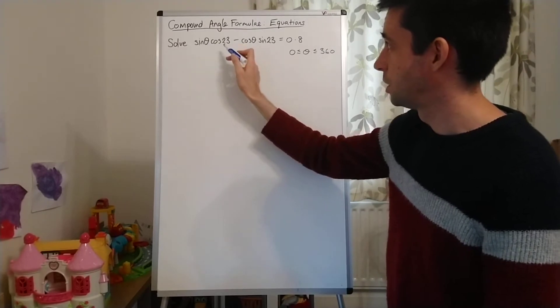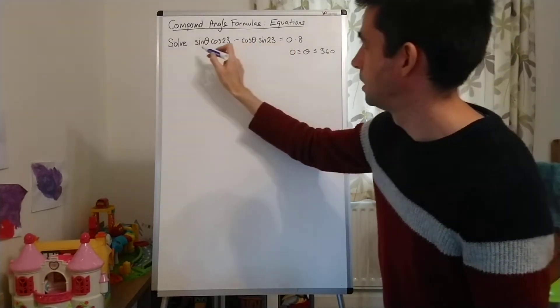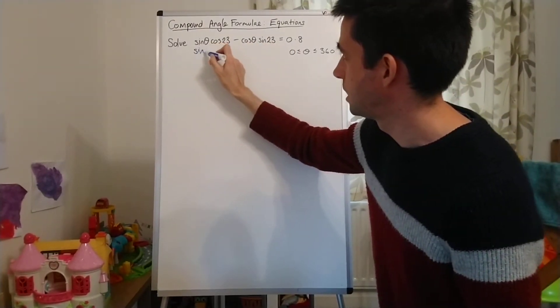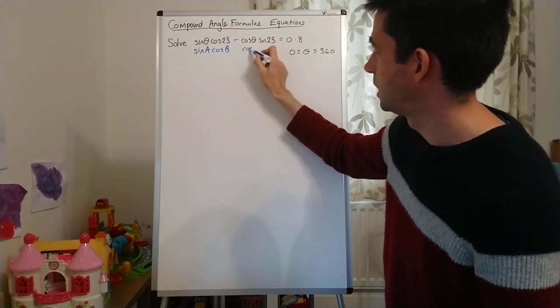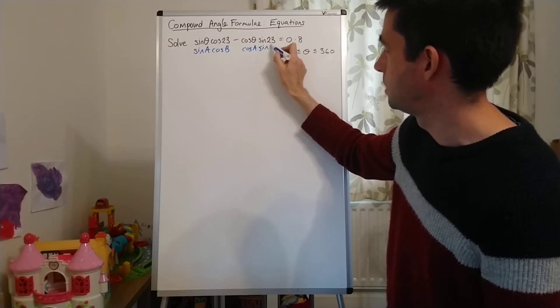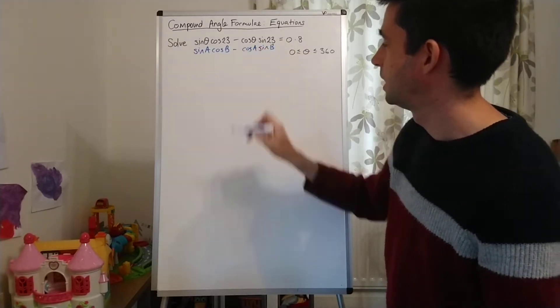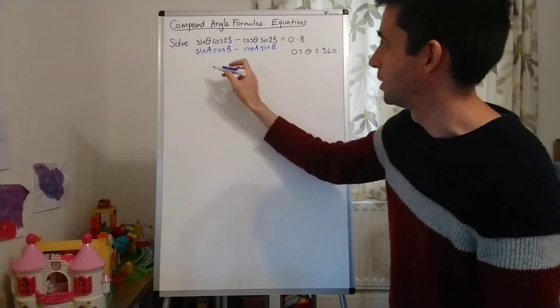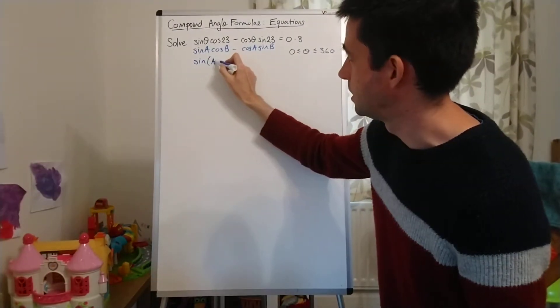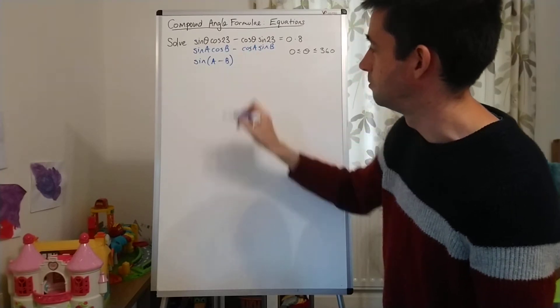So, I've got sin cos cos sin, so it's going to be sin A cos B cos A sin B, and it's the minus in the middle there. And that tells me that the identity that I'm using is sin A minus B.